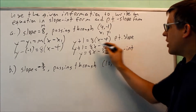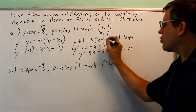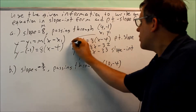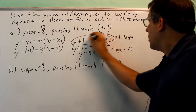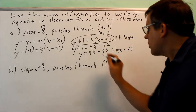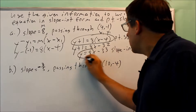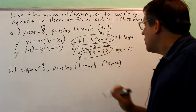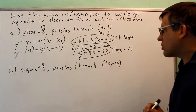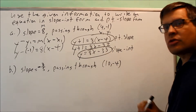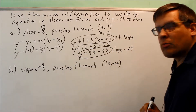So here are the two answers for part A. The first is the point-slope formula, and the second is y equals 8x minus 33, which is slope-intercept form.